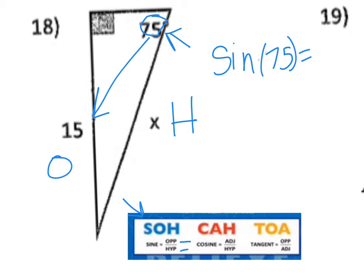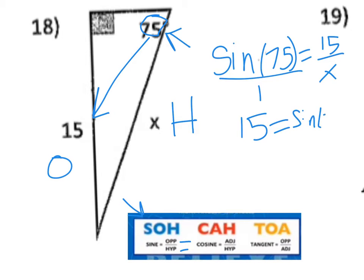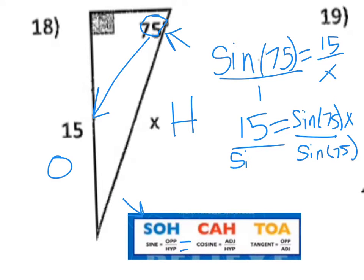Our O in this case is 15, and our X is unknown — our hypotenuse. Putting that over 1, we can cross multiply. When we cross multiply, 1 times 15 gives us 15, which equals the SINE of 75 times X. To get X by itself, we divide by the SINE of 75, and what we do to one side we have to do to the other.